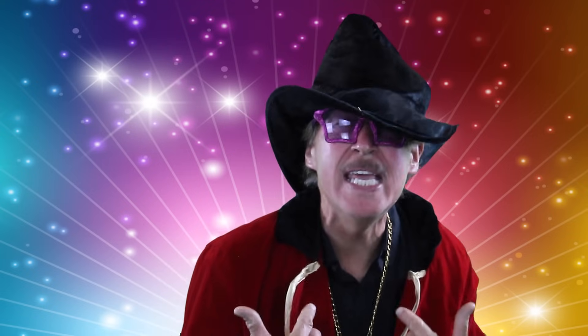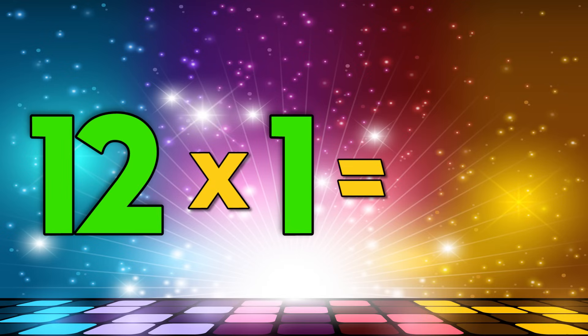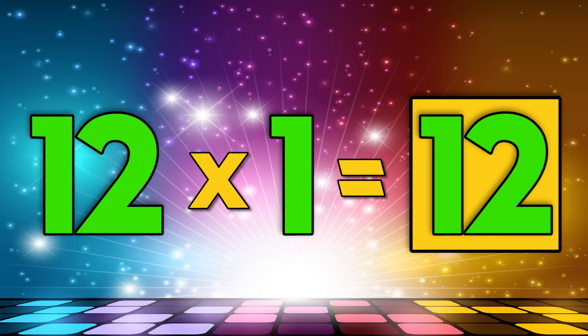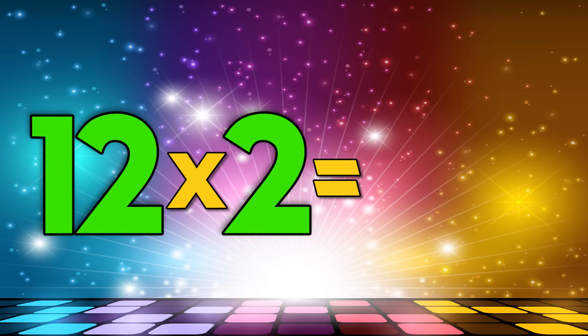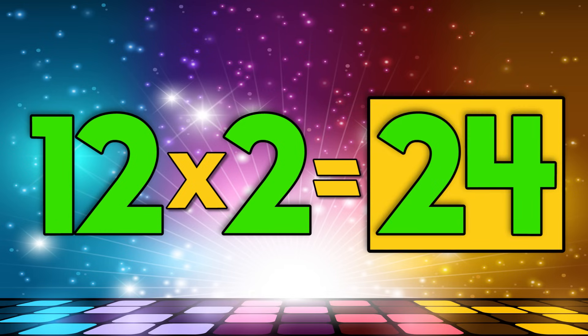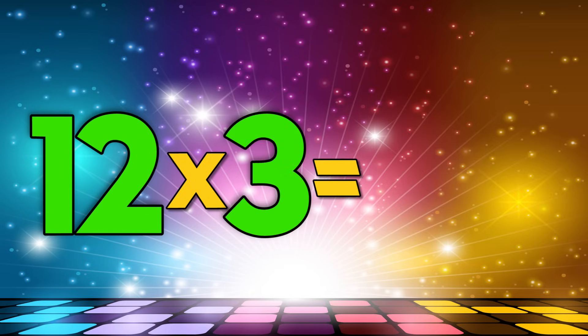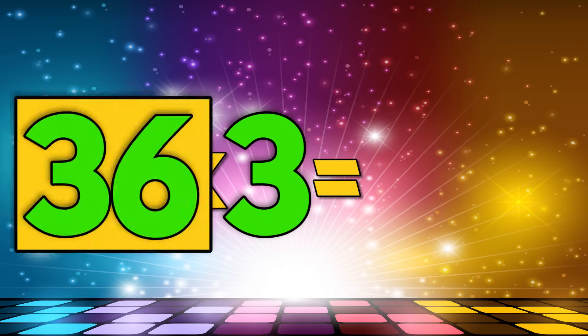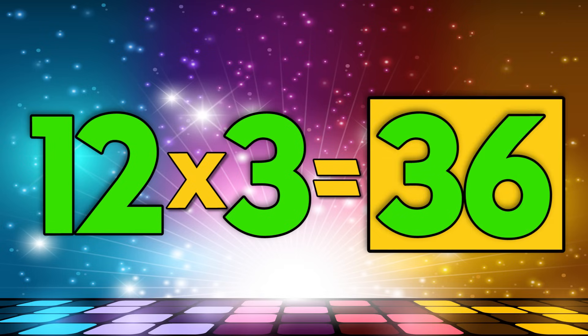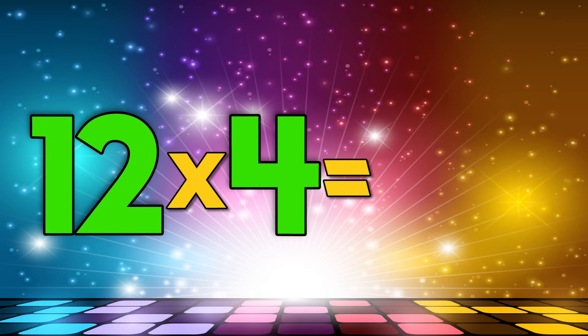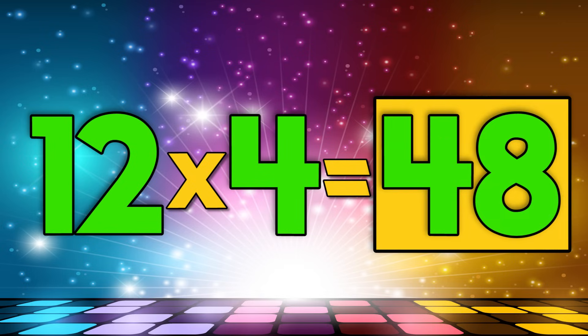Now try entering faster than me! Twelve times one is twelve, twelve times two is twenty-four, twelve times three is thirty-six, twelve times four is forty-eight.